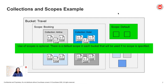Note that it is not necessary to use scopes. If you just want to have one level of hierarchy, you can just use the default scope which is going to be automatically there in every bucket. You can create a bucket and then start creating your collections inside the bucket, and these will go into the default scope if no scope is explicitly specified.